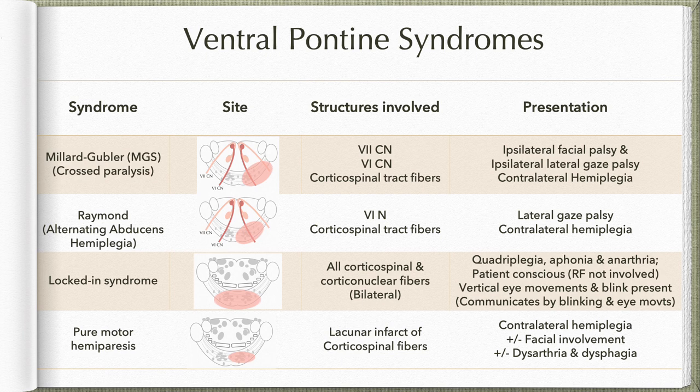In Millard-Gubler syndrome, there is one-sided hemiplegia with opposite-side cranial nerve nuclear involvement resulting in facial palsy and lateral gaze palsy. Raymond syndrome is alternating abducens hemiplegia: there is ipsilateral lateral gaze palsy due to involvement of the sixth nerve as it exits, and contralateral hemiplegia due to involvement of the corticospinal tract fibers.